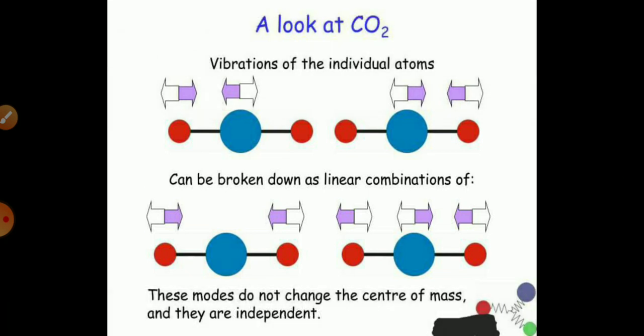As you can see in this polyatomic molecule CO2, the vibration of an individual atom — this is the CO2 molecule, the center is a carbon atom and the two red symbols are for the oxygen. In the first diagram, one atom of oxygen and one atom of carbon can vibrate in the same direction. In the second diagram, the carbon atom and the second oxygen atom vibrate in the same direction. It can be expressed as the linear combination: both oxygen atoms move in the same direction, or two are moving in the same direction and one is in the opposite direction. These modes do not change the center of mass and they are independent vibrations in a polyatomic molecule.